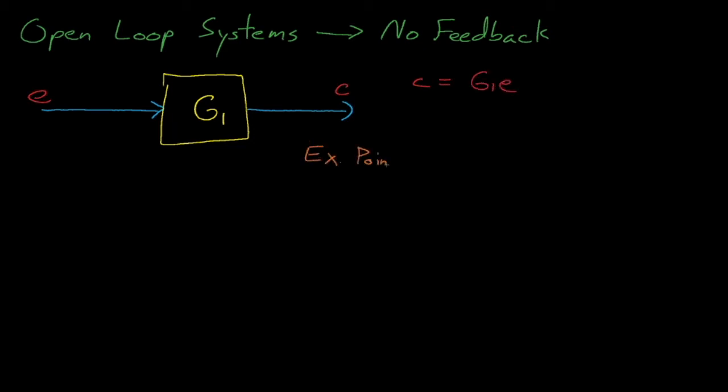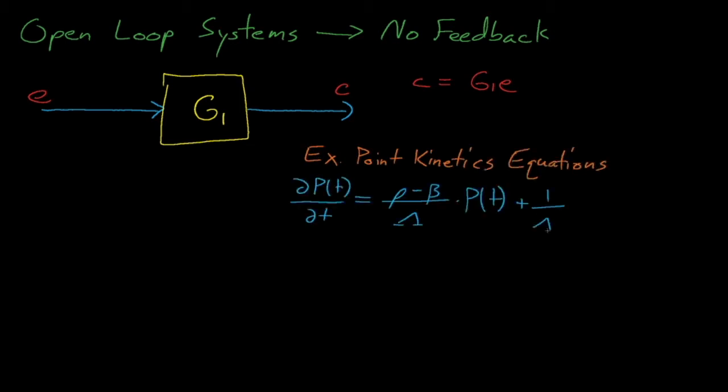A kinetics model of a reactor with no feedback is an example of an open-loop system. Given some sort of reactivity insertion, the reactor's power can increase to any arbitrary magnitude.